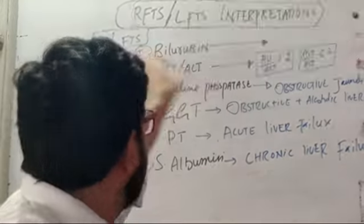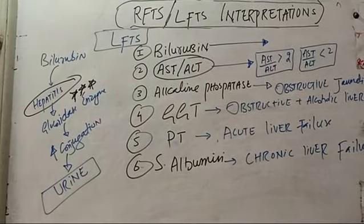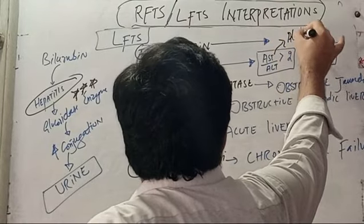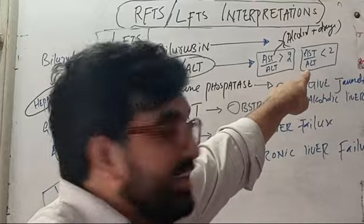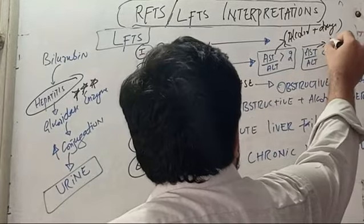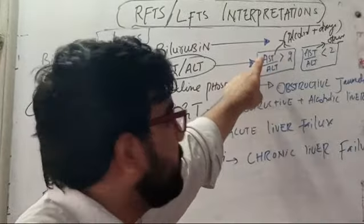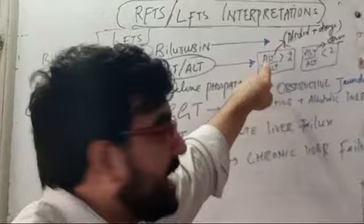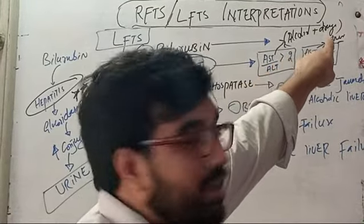Now for AST and ALT — these are raised in many diseases involving direct liver damage. The ratio of AST to ALT is important: if it is more than two, the cause is alcohol or drug-induced hepatitis. If both AST and ALT are elevated but the ratio is less than two, that means all other causes. AST comes from both mitochondria and cytoplasm of hepatocytes, while ALT comes only from the cytoplasm.